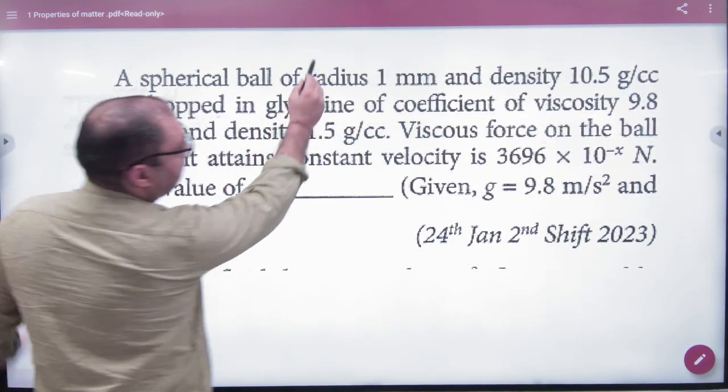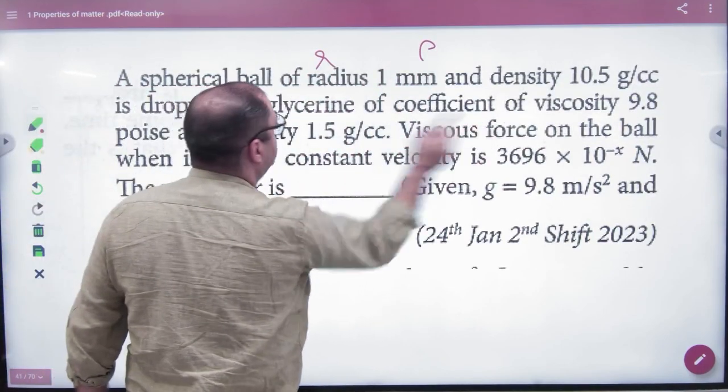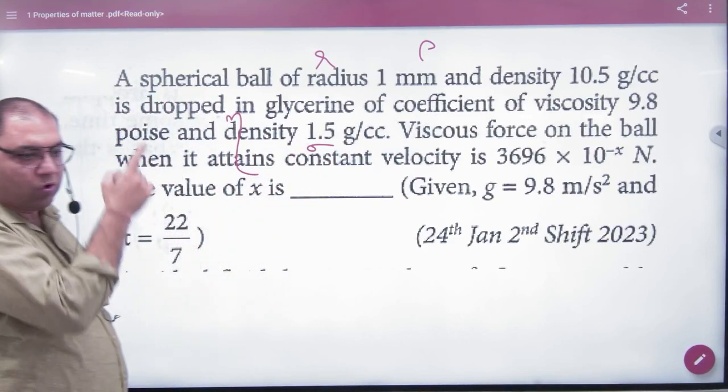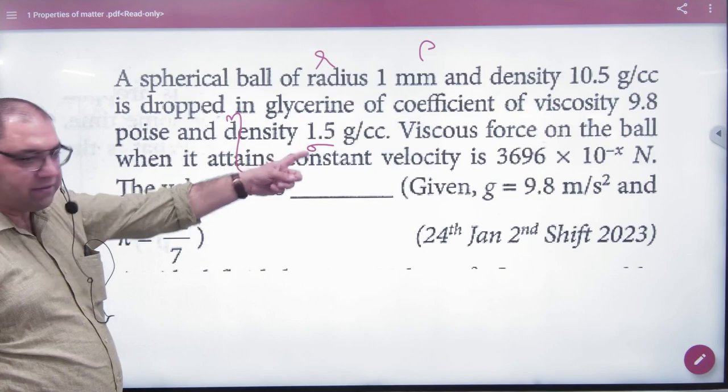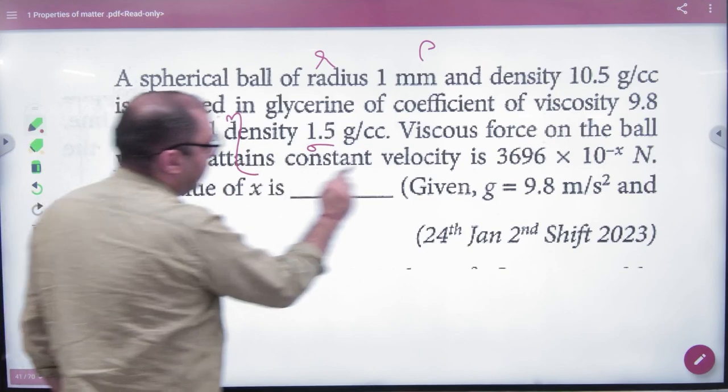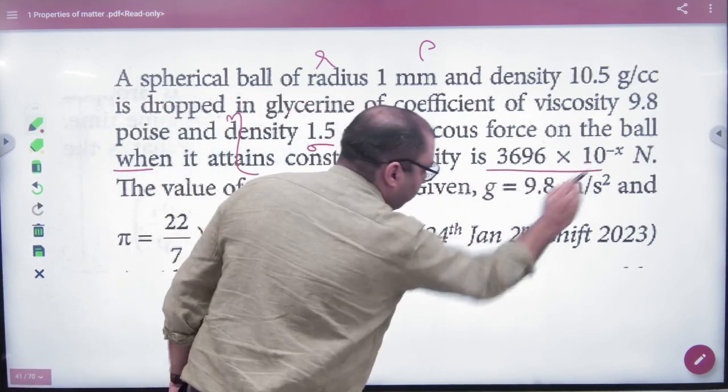A spherical ball with known radius and density is dropped in glycerine of known viscosity η and density σ. Here, ρ is body density and σ is medium density. Find the viscous force on the ball when it attains constant velocity, which is terminal velocity.